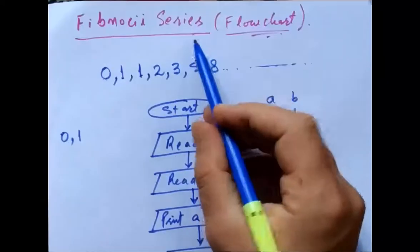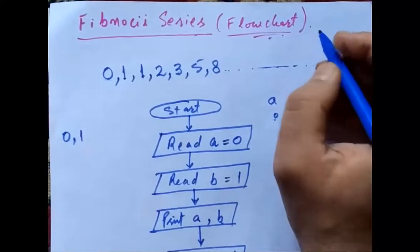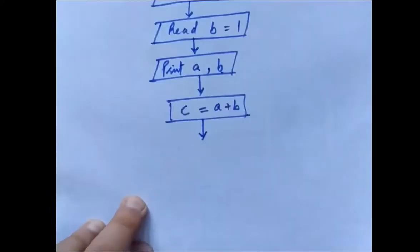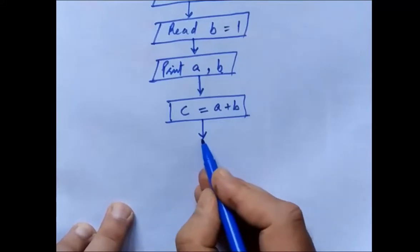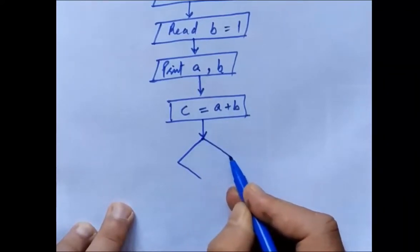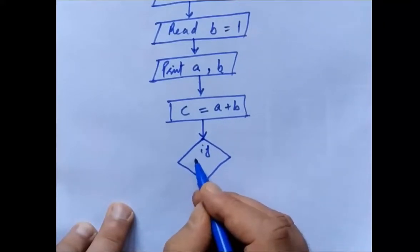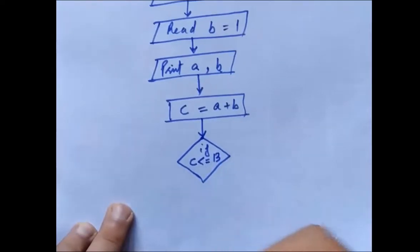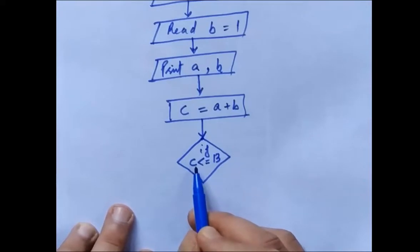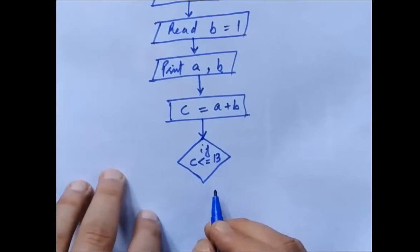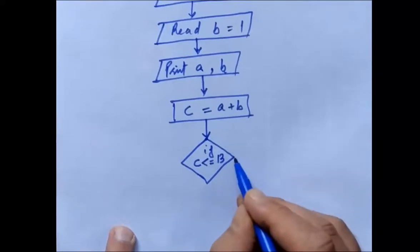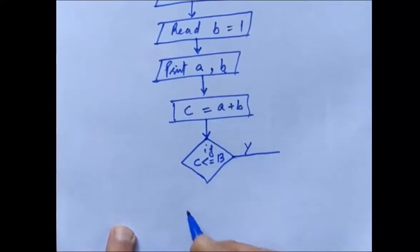Suppose I have to generate the Fibonacci series up to 13. I will make a condition here: if c is less than or equal to 13. If the answer is yes, I will follow the yes branch on this side, and no on the other side.